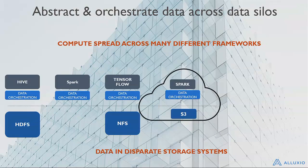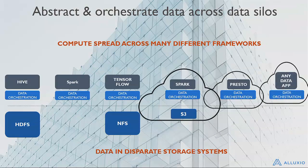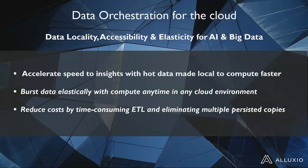Spark, Presto, and moving forward, any data-driven application talks to the same layer. In five years, there will be another wave of innovation beyond what is popular today. That's how the world will evolve with this new layer, new system, new concept in the IT stack. This data orchestration system for the cloud provides three major values: data locality, data accessibility, and data elasticity for AI, big data, and any data workloads moving forward.